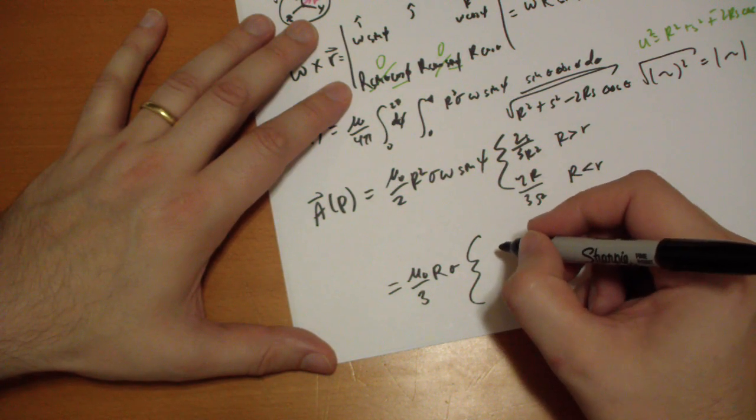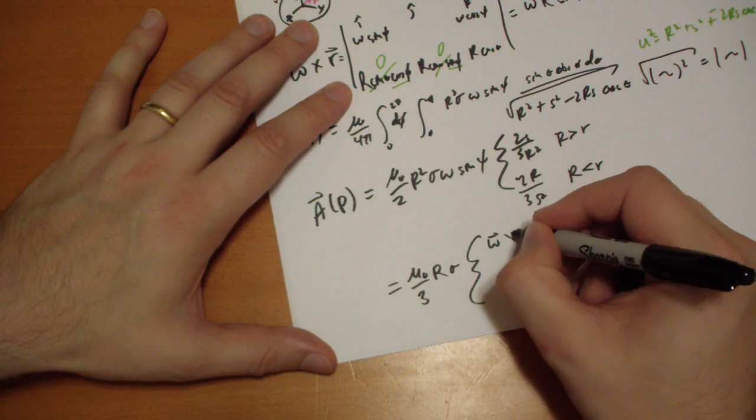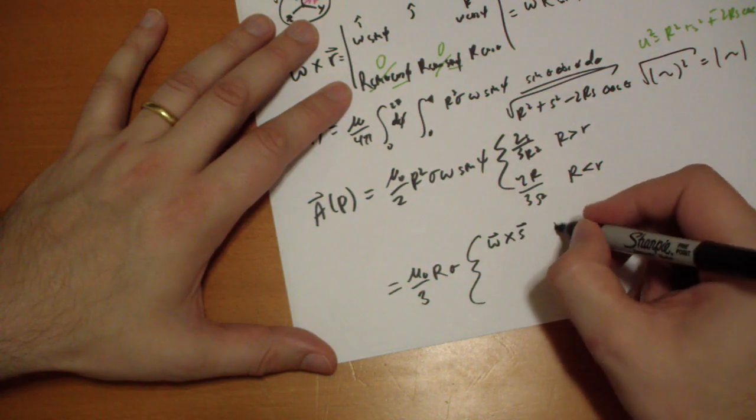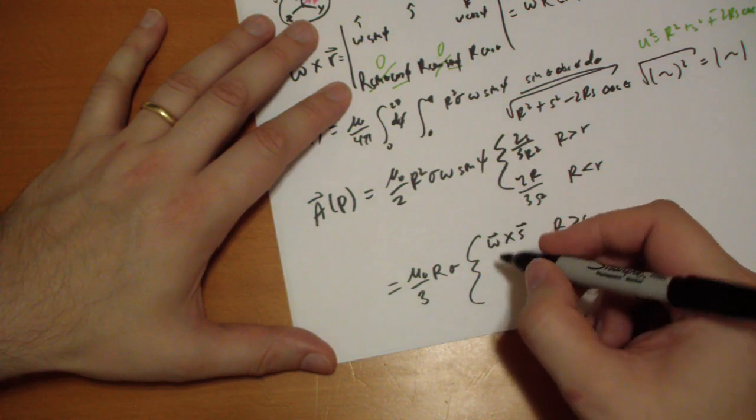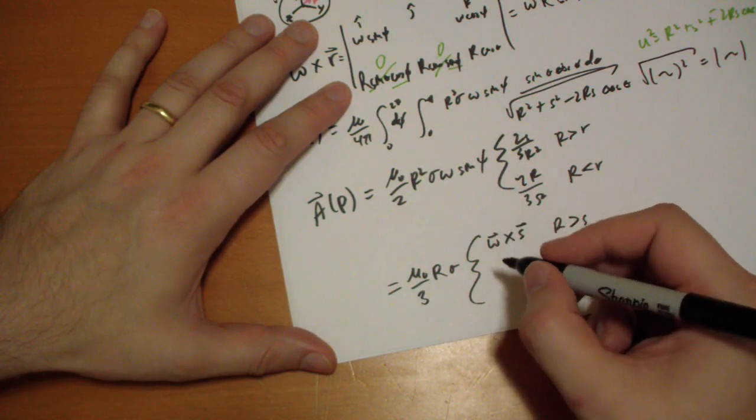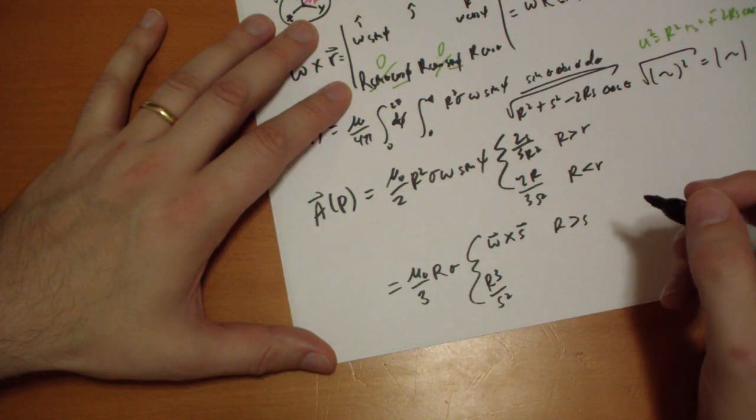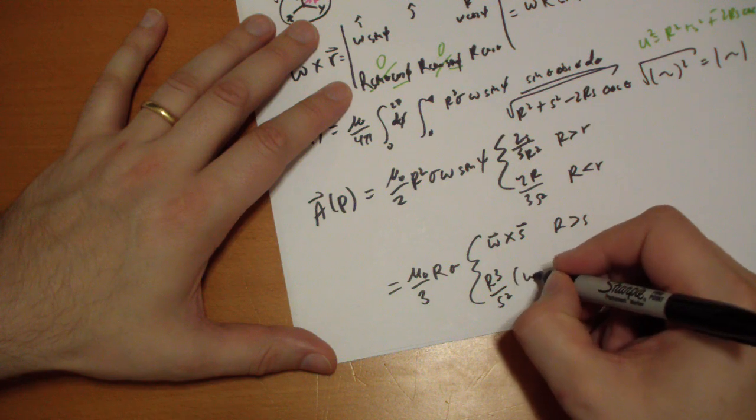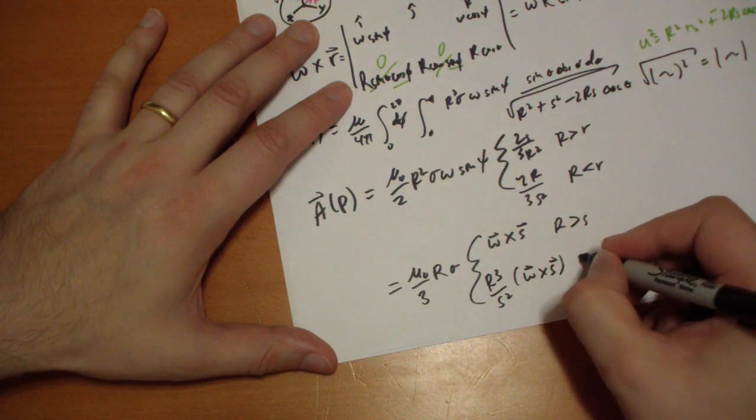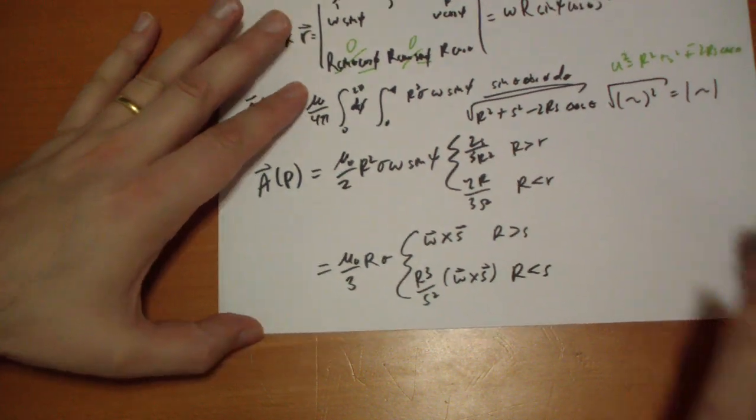And then he gets up here omega cross S when R is greater than S. And then he gets down here, he has 3 more R's and 2 S's on the bottom, omega vector cross S vector when R is less than S.